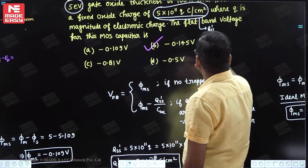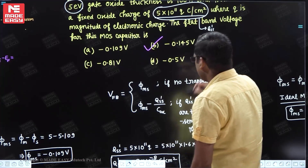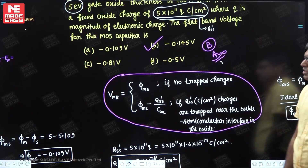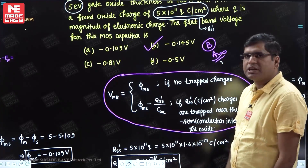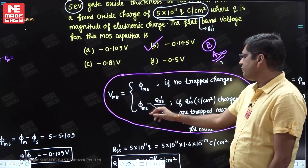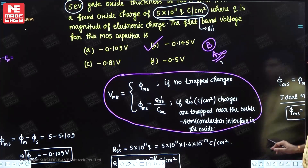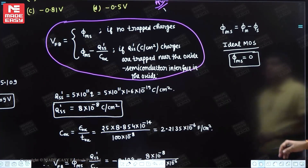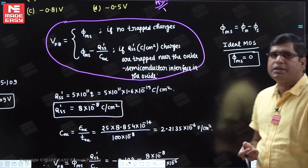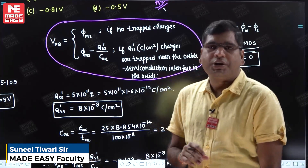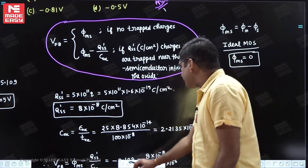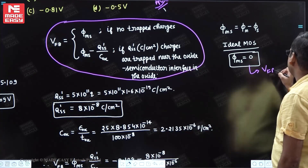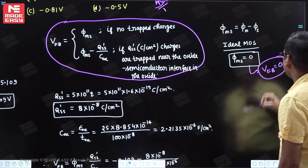The answer −0.145 V corresponds to option B. You must remember this formula as questions on it appear frequently. Sometimes the question asks for trapped charges when flat band voltage is given — then you can rearrange and solve for Q_ss'. If it is an ideal MOS capacitor, phi_ms = 0 and there are no trapped charges, so flat band voltage = 0 and no gate voltage needs to be applied to achieve flat band condition.